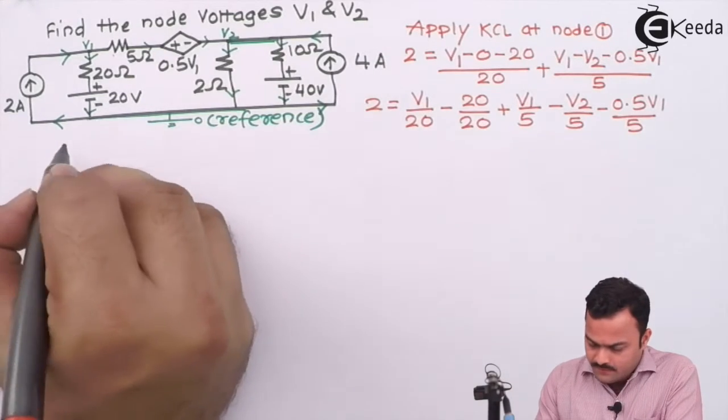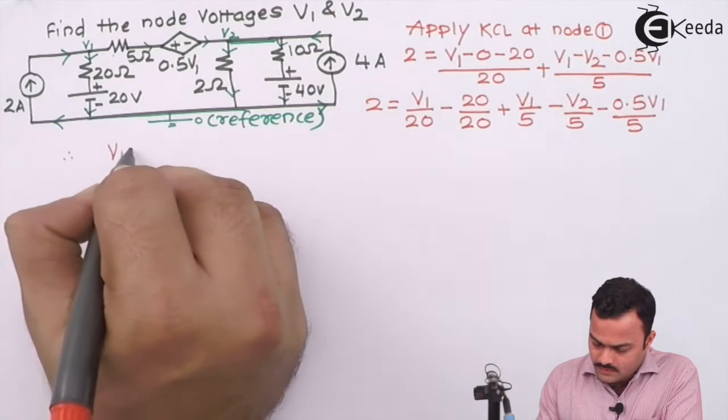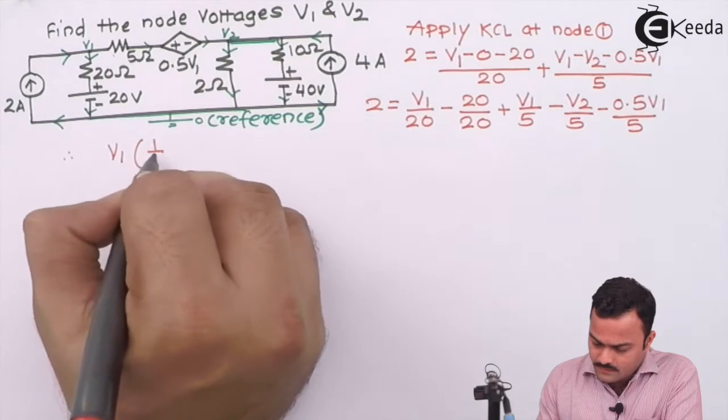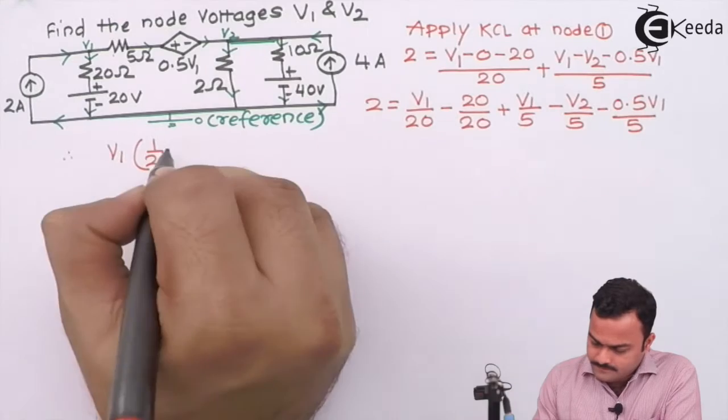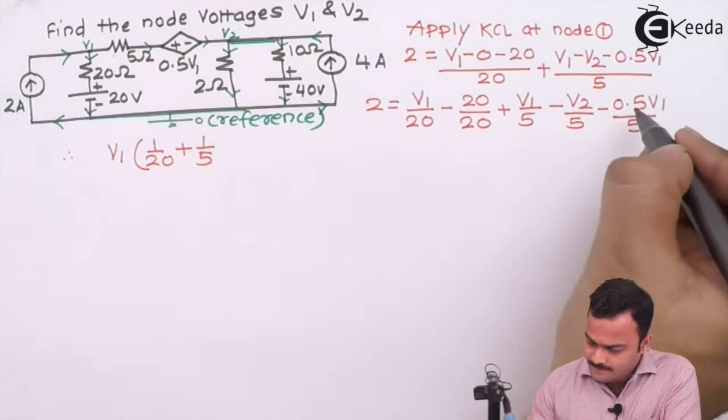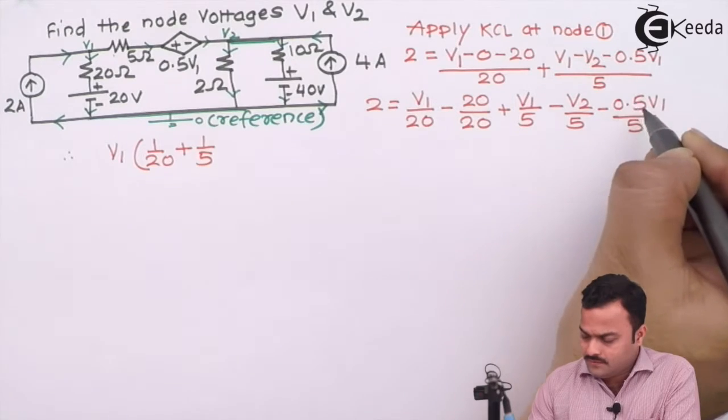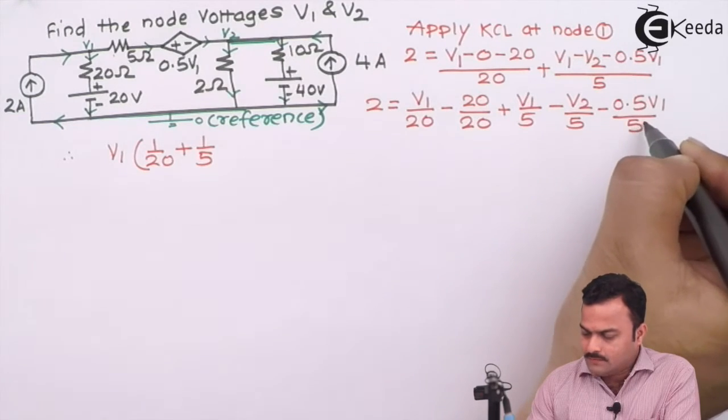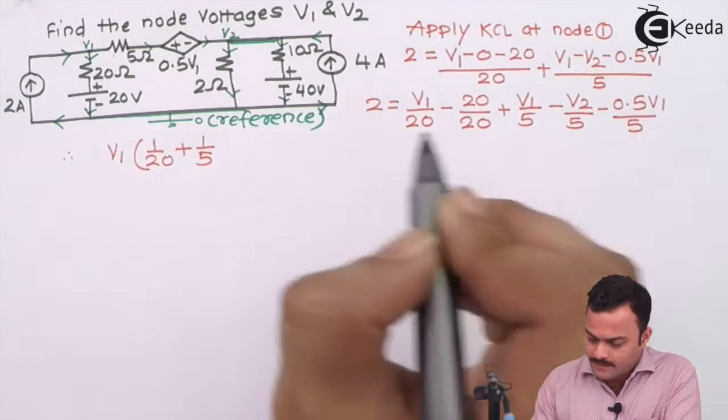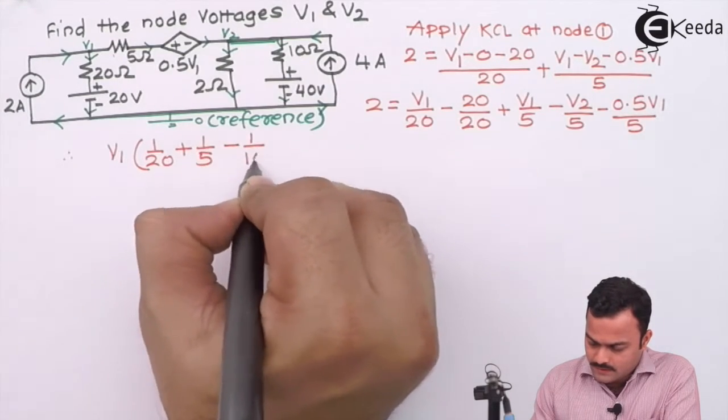After simplifying we will get a final equation as V1, the coefficient is 1 by 20 plus 1 by 5. If I consider 0.5 as half, so 1 by 2 multiplied with this 1 by 5, in the end it will be minus 1 by 10.